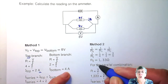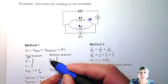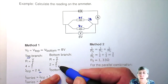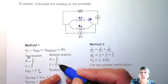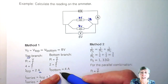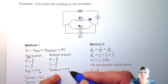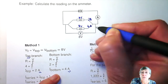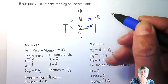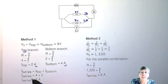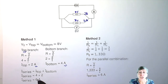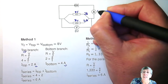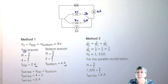When you look at the bottom branch, doing Ohm's law only for the bottom branch — resistance 2 ohms and 8 volts — you end up with 4 amperes travelling in that bottom branch. Then remember that the series current is just the two branches added together, so together that gives you a 6-ampere reading.